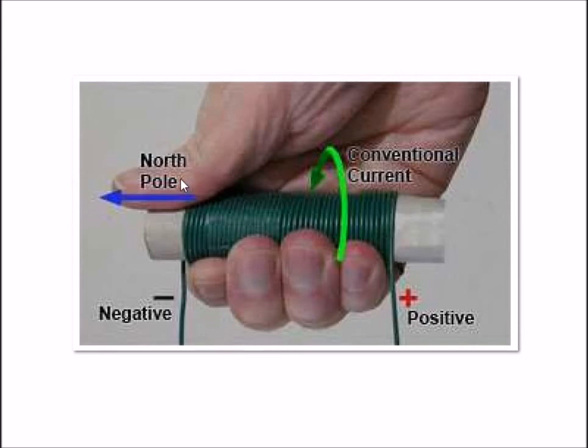We used to have something similar called the left hand rule, but since we're using conventional current and not electron flow, you would use the right hand rule.